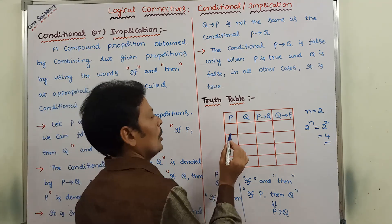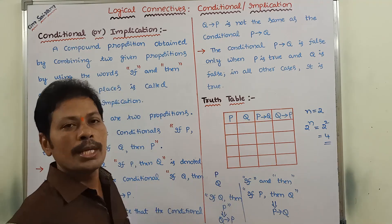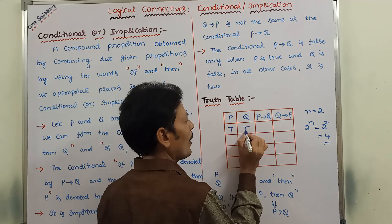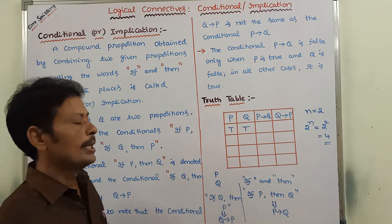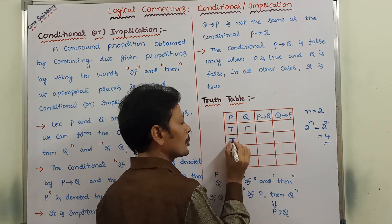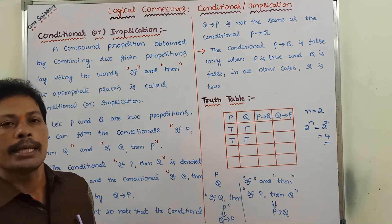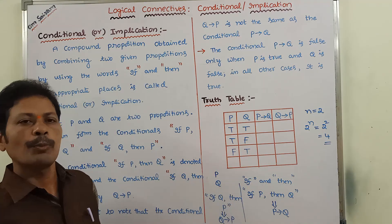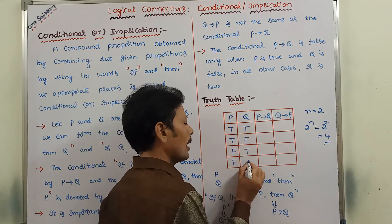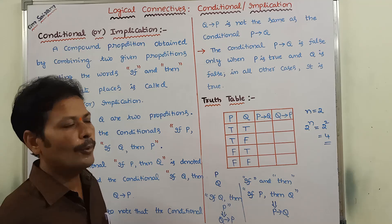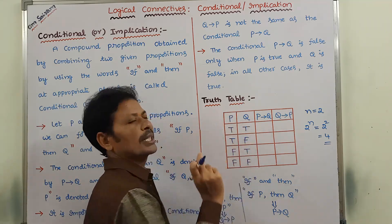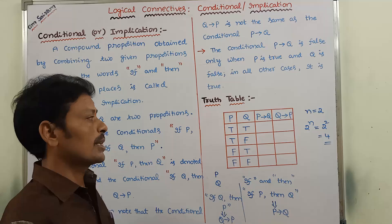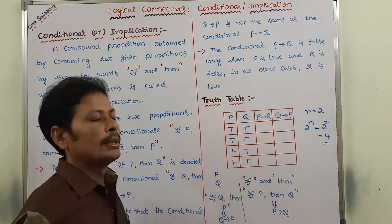When we are considering two propositions, what are the possible truth values? First possibility: P is true and Q is true. Second possibility: P is true and Q is false. Third possibility: P is false and Q is true. Fourth possibility: P is false and Q is false. These possible truth values of P and Q are represented in the first and second columns of the truth table.